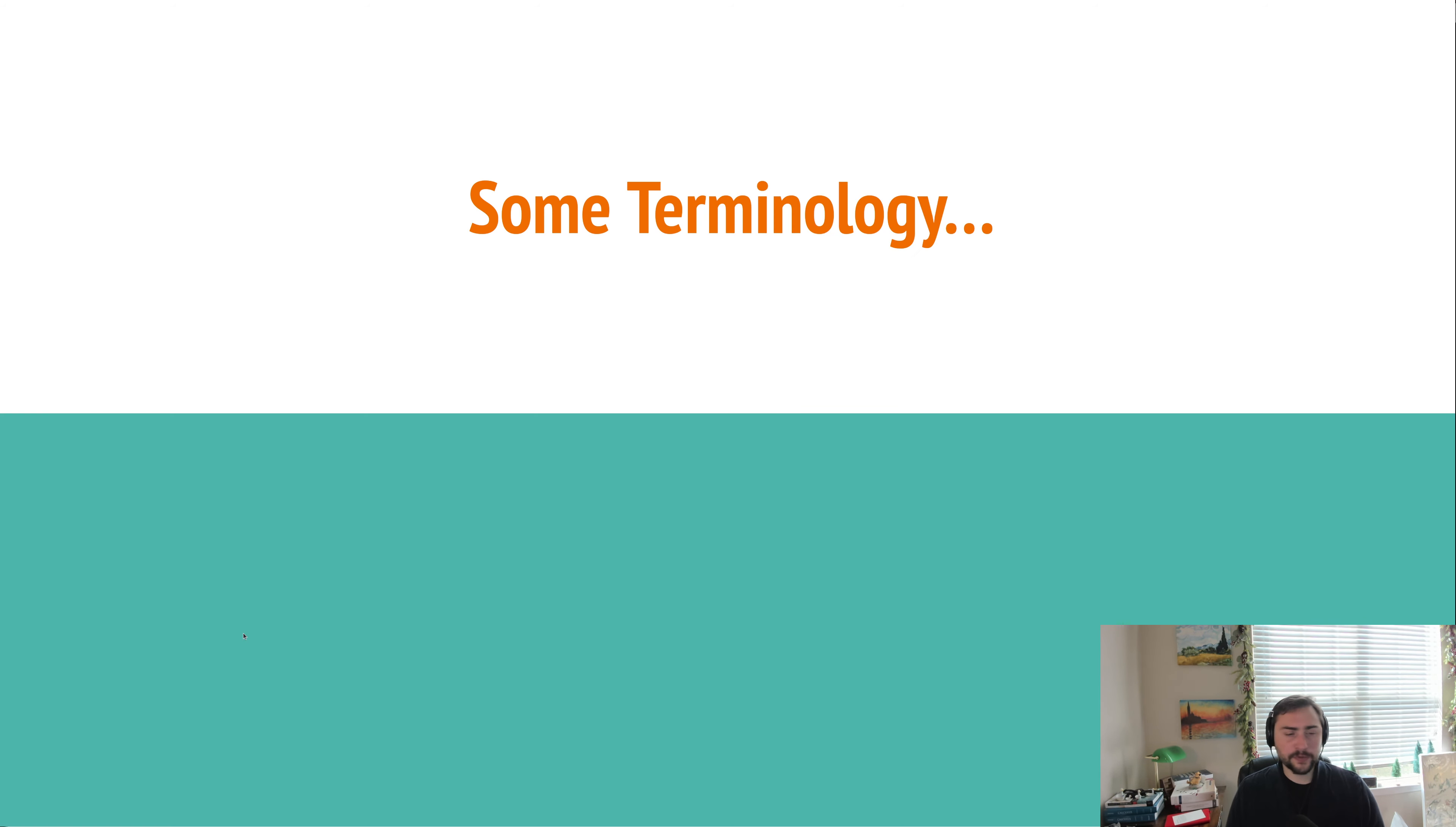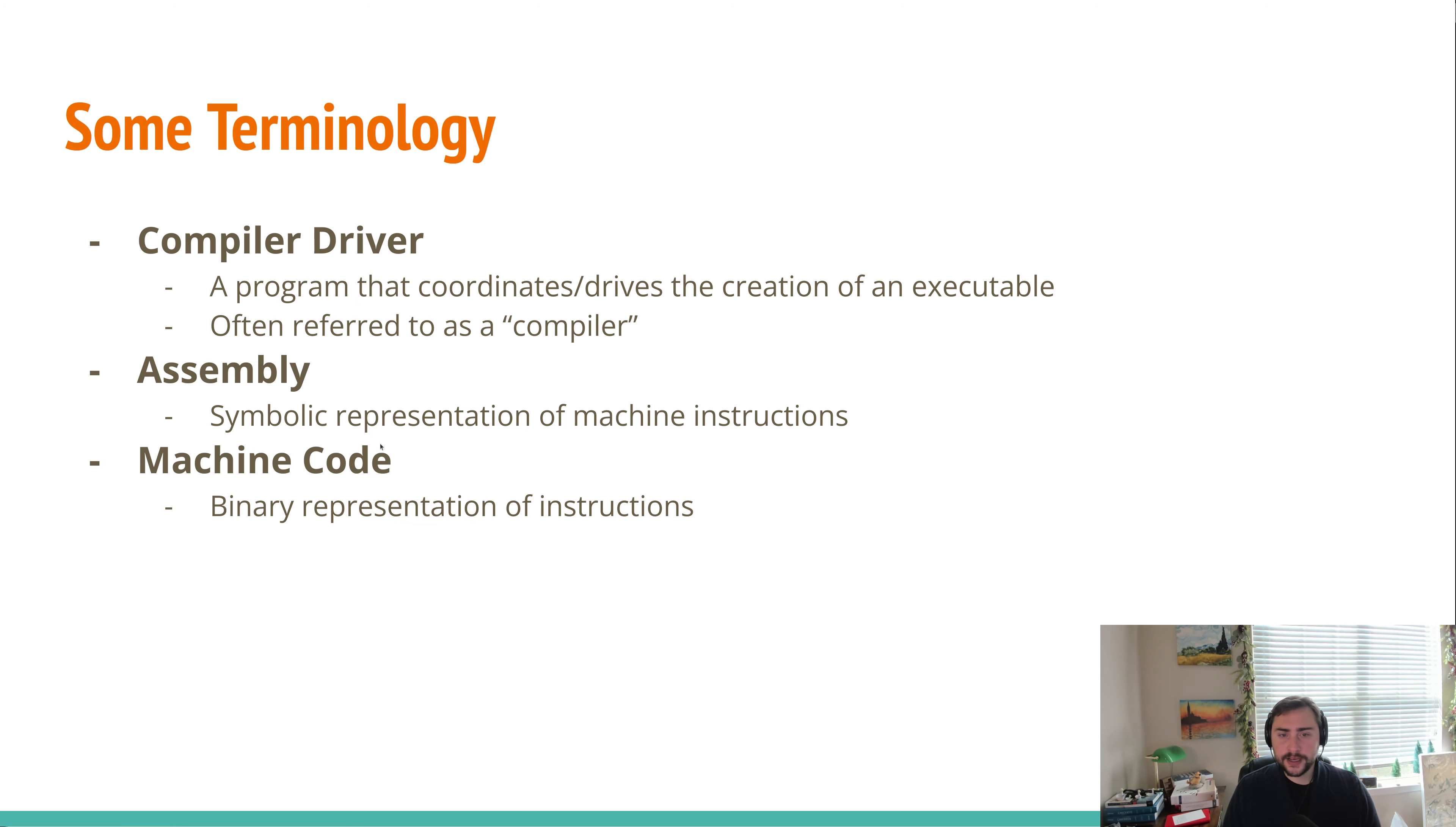Okay. So before we move on into how we generate executables and the basic flow of that, we should go over some terminology. So the first piece of terminology we have is this thing called a compiler driver. Now a compiler driver is a program that coordinates and drives the creation of an executable, or something like a library. Now this is often just referred to as a compiler, right?